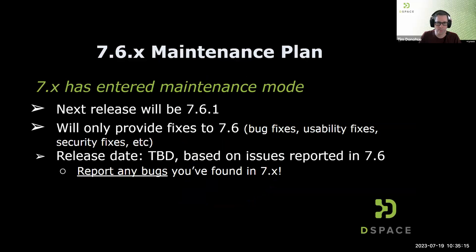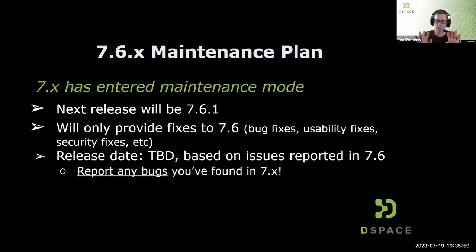DSpace 7 has entered maintenance mode. The next release will be 7.6.1. We are only providing fixes now — bug fixes, usability fixes, security fixes — but no new features. We don't have a release date yet for 7.6.1, but we're already fixing some small bugs. That date will be announced when we've accumulated a decent group of fixes. If you find any issues, please report them so we can get them into the next bug fix release.